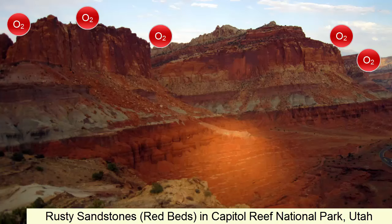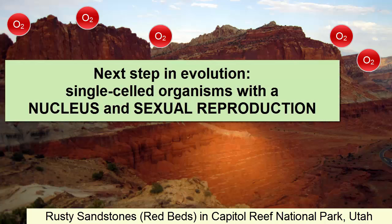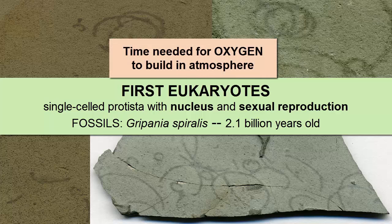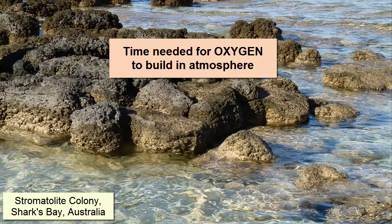The first step towards that advanced life was developing a nucleus and sexual reproduction. The oldest evidence we have of this evolution are fossils of Grypanius spiralis, found in 2.1 billion year old banded iron formations in Michigan. However, it was quite a long time before organisms like these really proliferated and cooperated to create multi-celled life, because it had to wait until the oxygen levels in the atmosphere built up enough to support the increased metabolism that goes along with multi-celled life. The stromatolites and other photosynthesizing bacteria still had a lot of work to do.